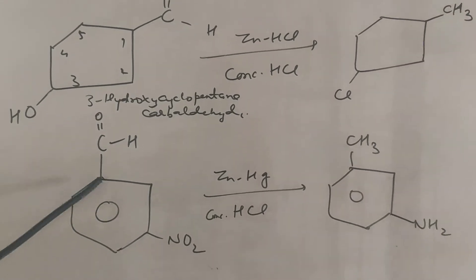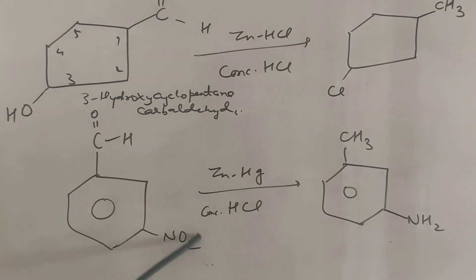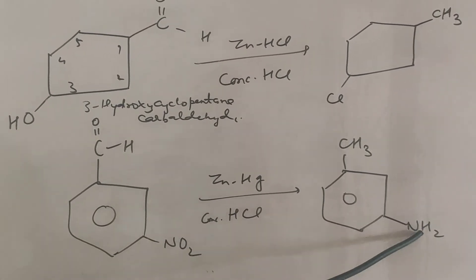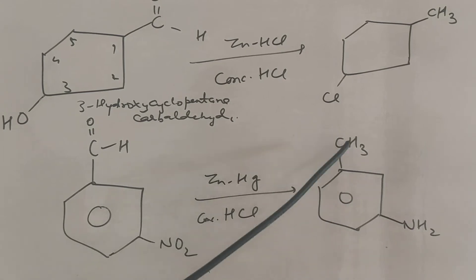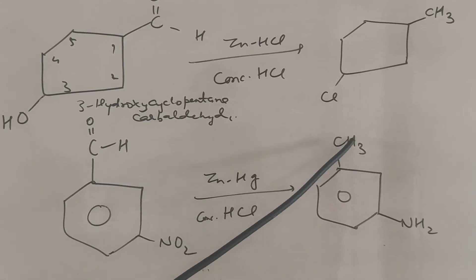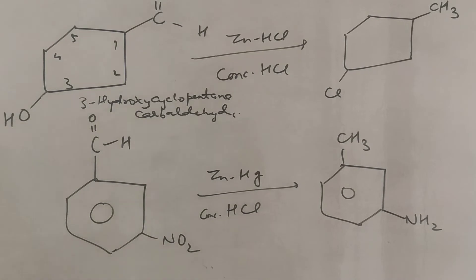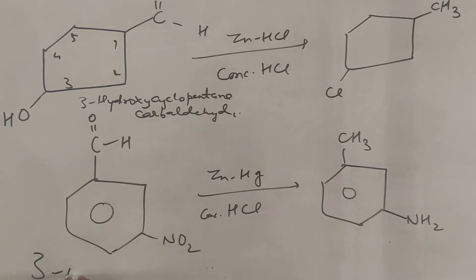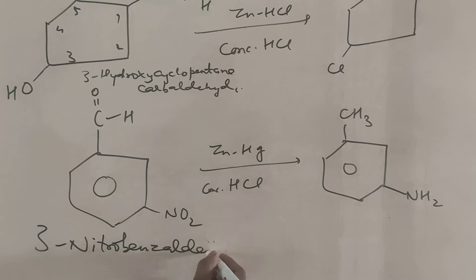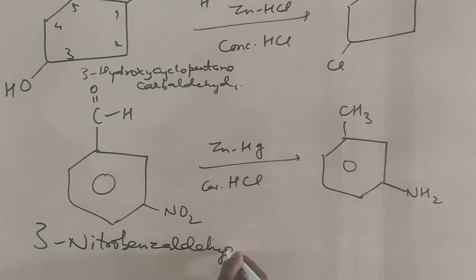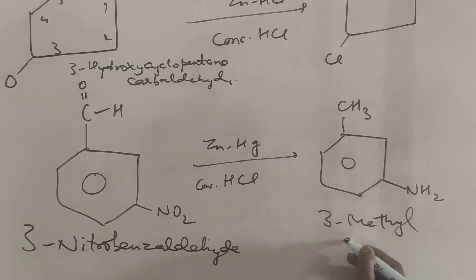Similarly, if you have 3-nitrobenzaldehyde, the nitro group gets reduced to an amino group and the aldehyde is also reduced. So from 3-nitrobenzaldehyde, you get 3-methylaniline.